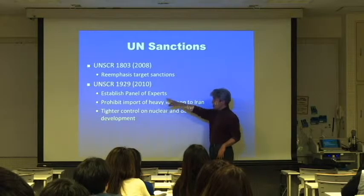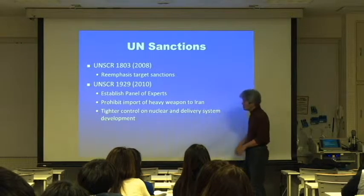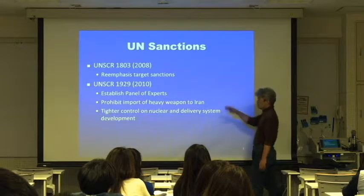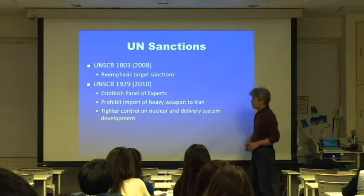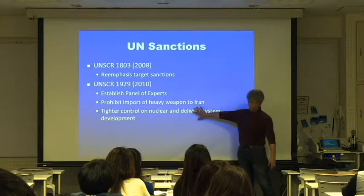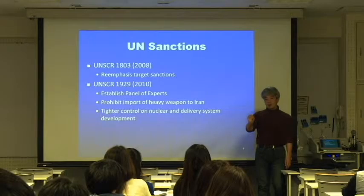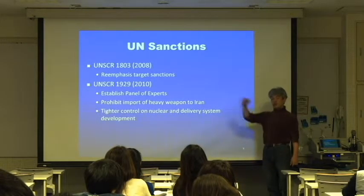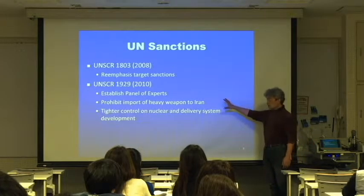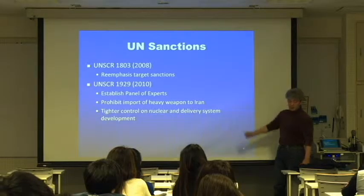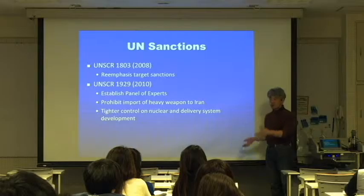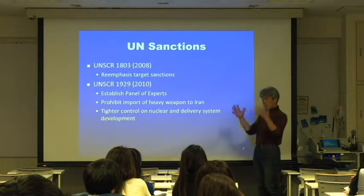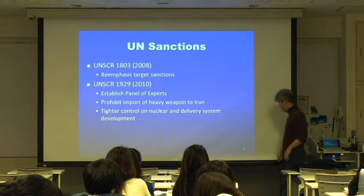In 2008 there was UNSCR 1803, which was another re-emphasis. And 1929, perhaps the most comprehensive one in 2010, establishing controls on exports, prohibiting imports of weapons to Iran, etc. Also, missile control — the delivery system. Nuclear program alone is not that threatening if you cannot carry it to a target. So a nuclear weapon must go together with a delivery system, usually missiles. Development of a nuclear weapon and a missile is therefore one combo that is the target of sanctions.